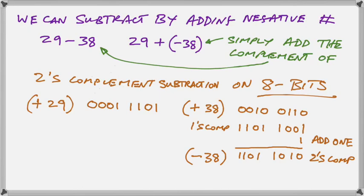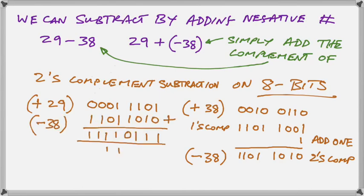So what we're going to do now is we're going to take that negative 38 and we are going to add it to our positive 29 to produce our subtraction. So there it is, and there is the completed result.